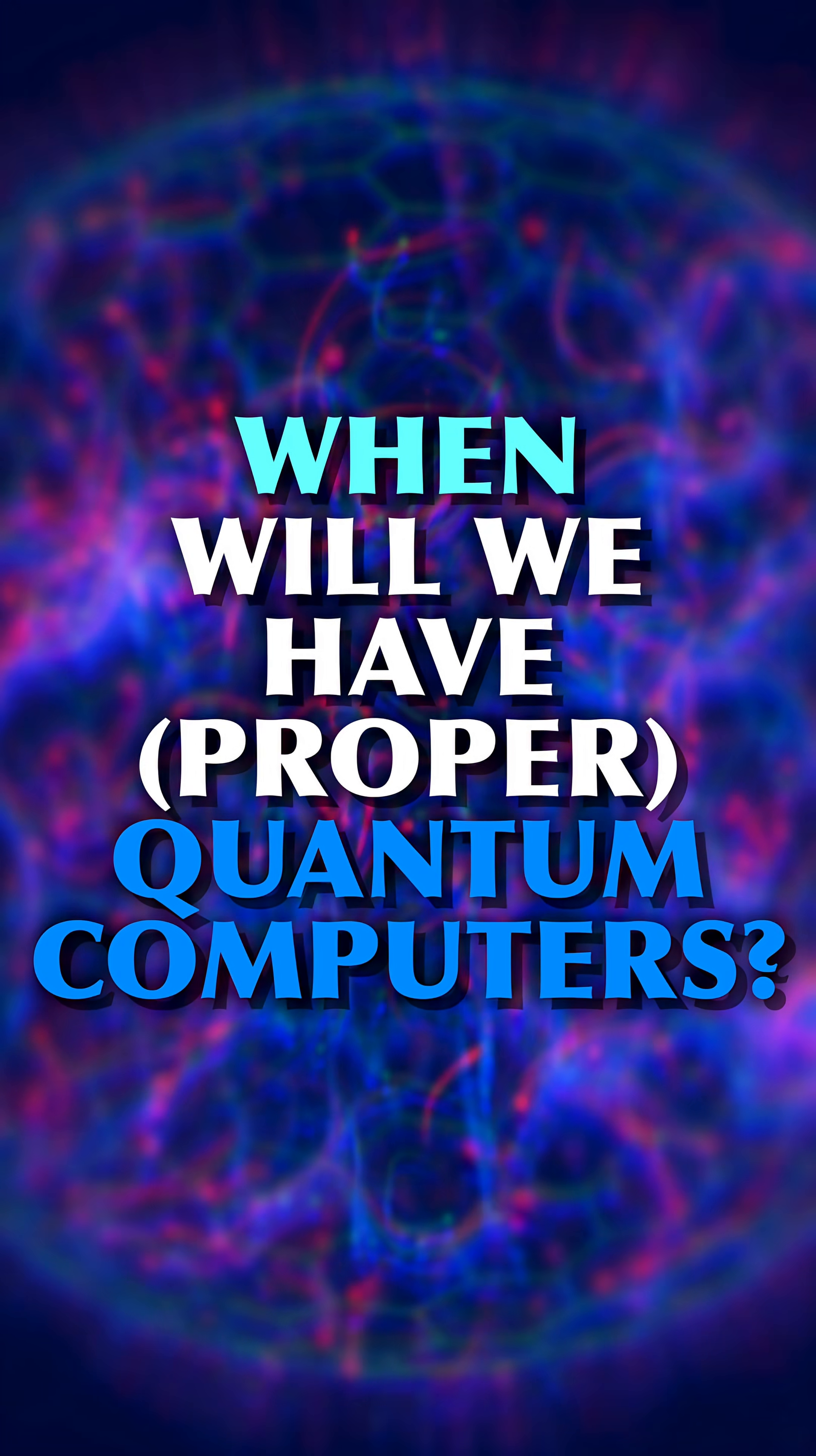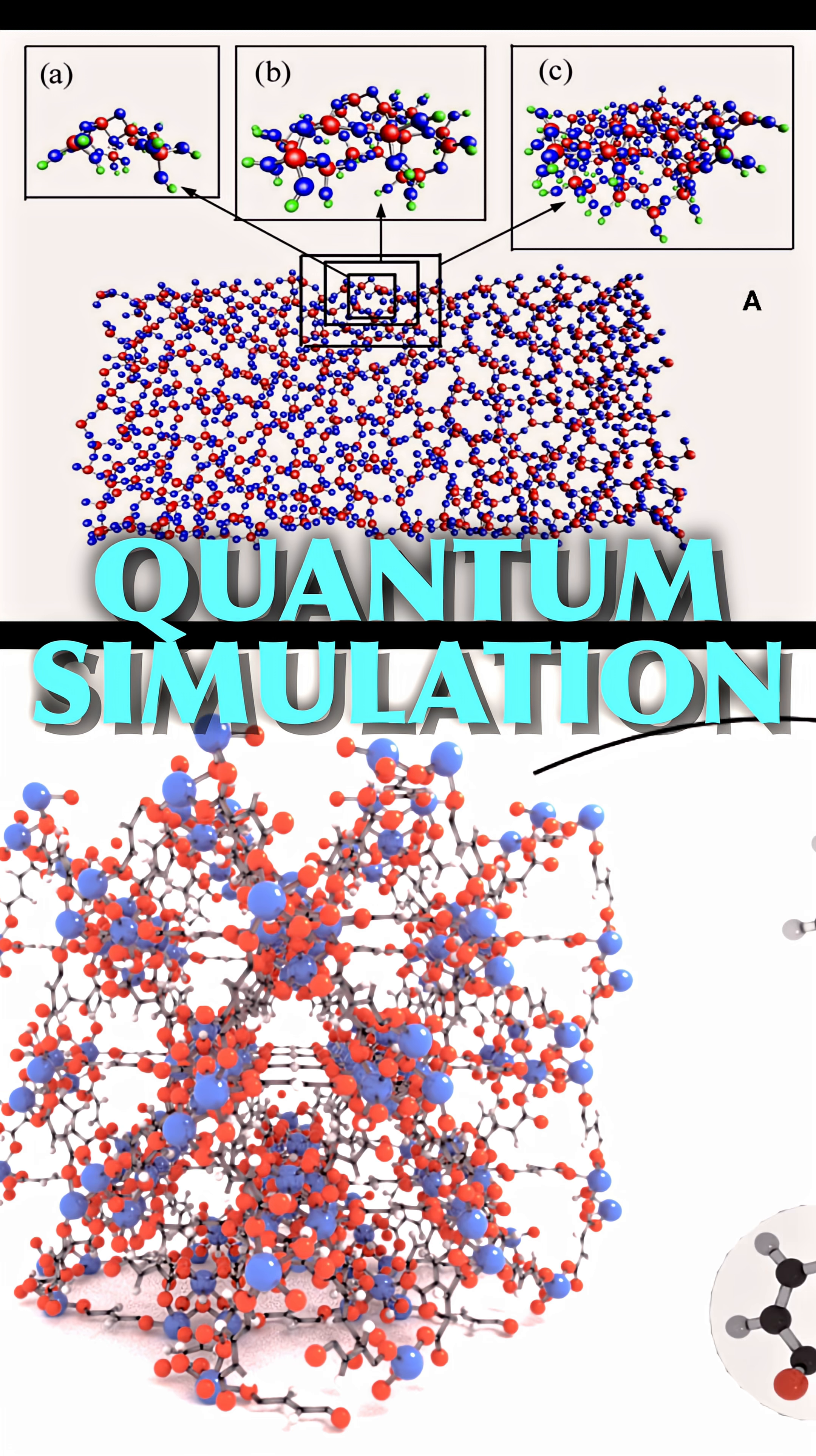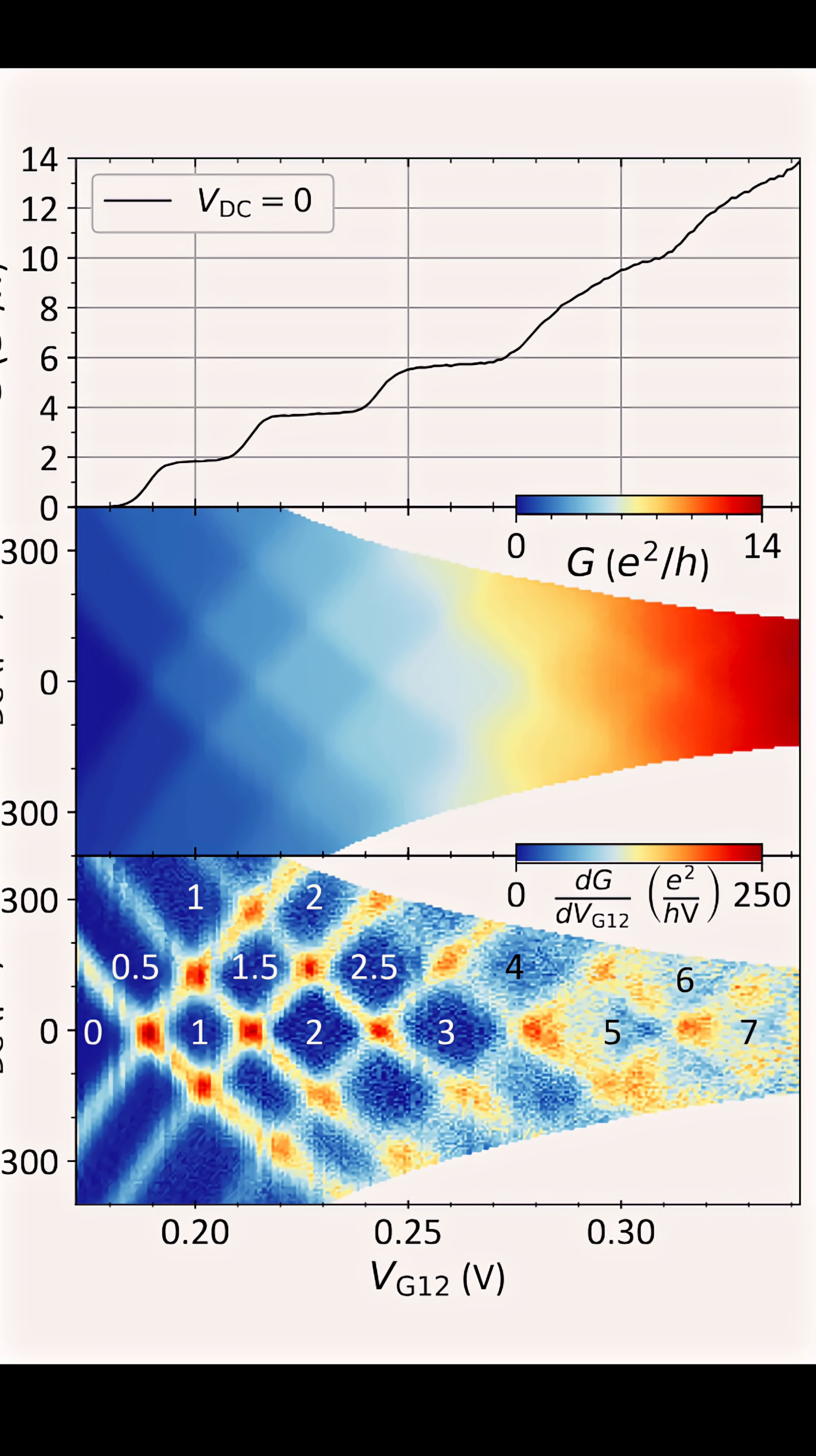When will we have proper quantum computers? When will we be able to build a quantum computer that can do something practical that normal computers can't? The most likely candidate for this is using quantum computers to simulate quantum systems, like for example, molecules or more complex structures. This can be used for designing better batteries, drugs, or new materials.